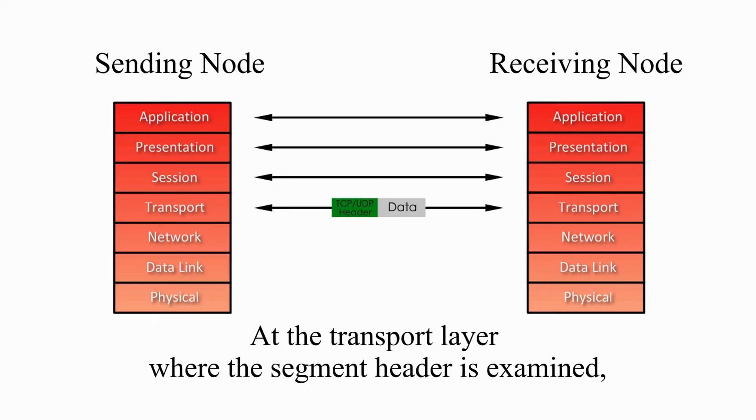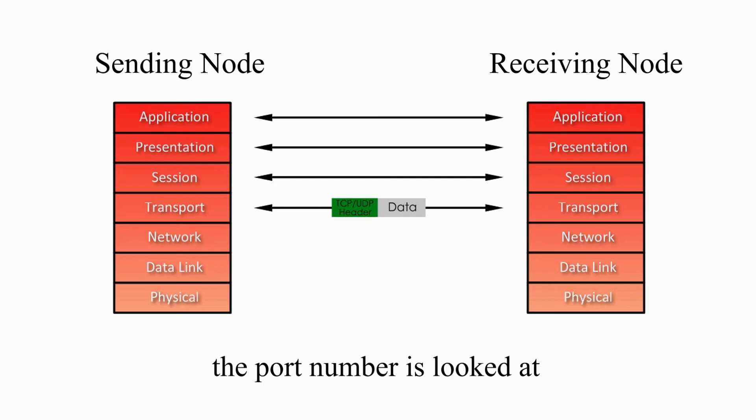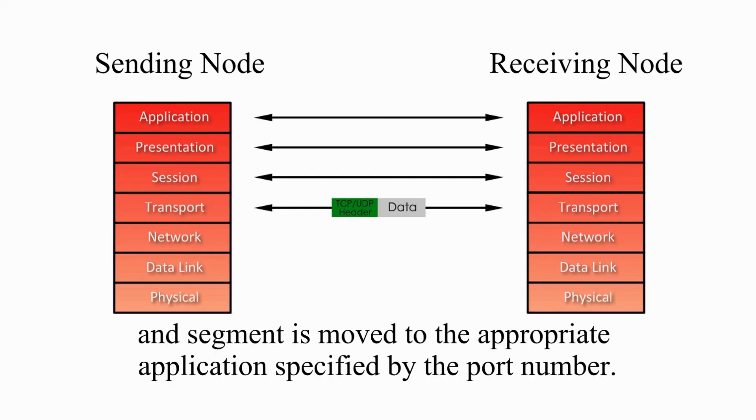At the transport layer where the segment header is examined, the port number is looked at, and segment is moved to an appropriate application specified by the port number.